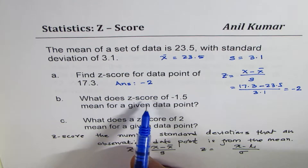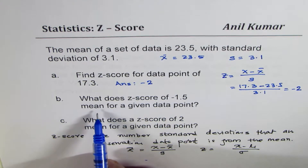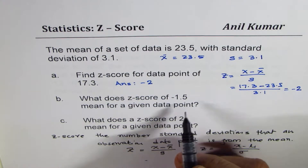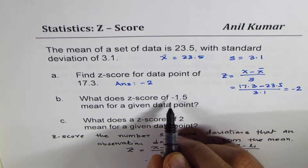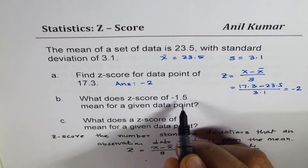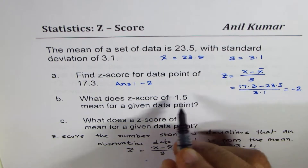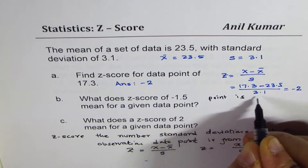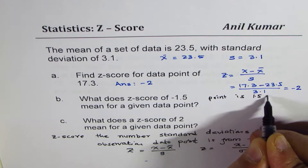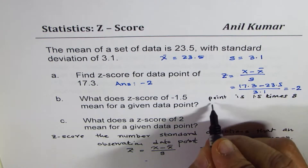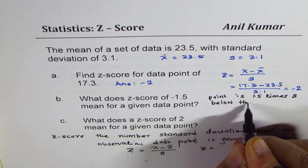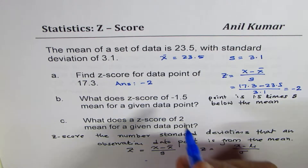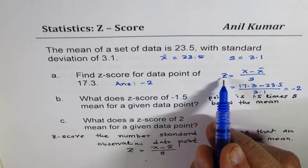The second question asks: what does a z-score of minus 1.5 mean for a given data point? It means the data point is 1.5 standard deviations below the mean. That is what it means — the point is 1.5 times the standard deviation below the mean.